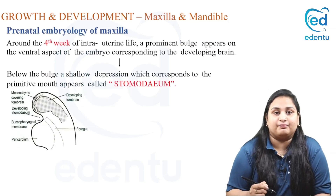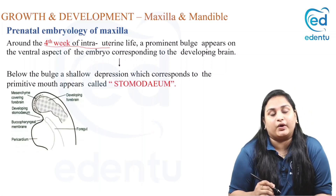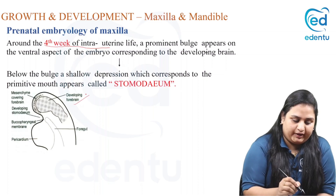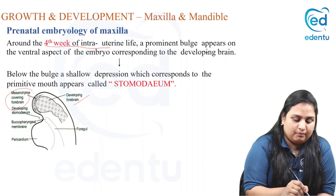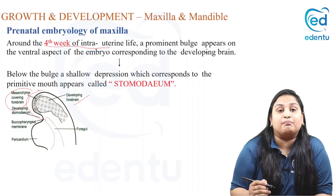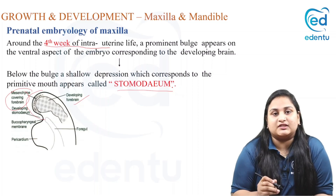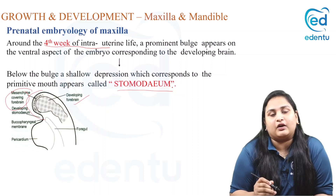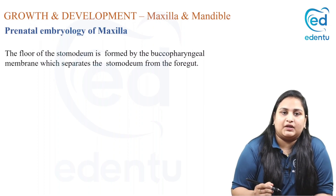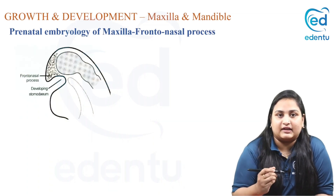Let's trace back our journey of maxilla. During the fourth week of intrauterine life, there is a prominent bulge which appears on the ventral aspect of the embryo close to the developing brain. As we can see in the figure, here is a developing forebrain with its mesenchymal covering, and this prominent bulge is appearing here. Below the bulge there is a shallow depression corresponding to the primitive mouth called the stomodium. There is also formation of the buccopharyngeal membrane that separates the stomodium from the foregut.